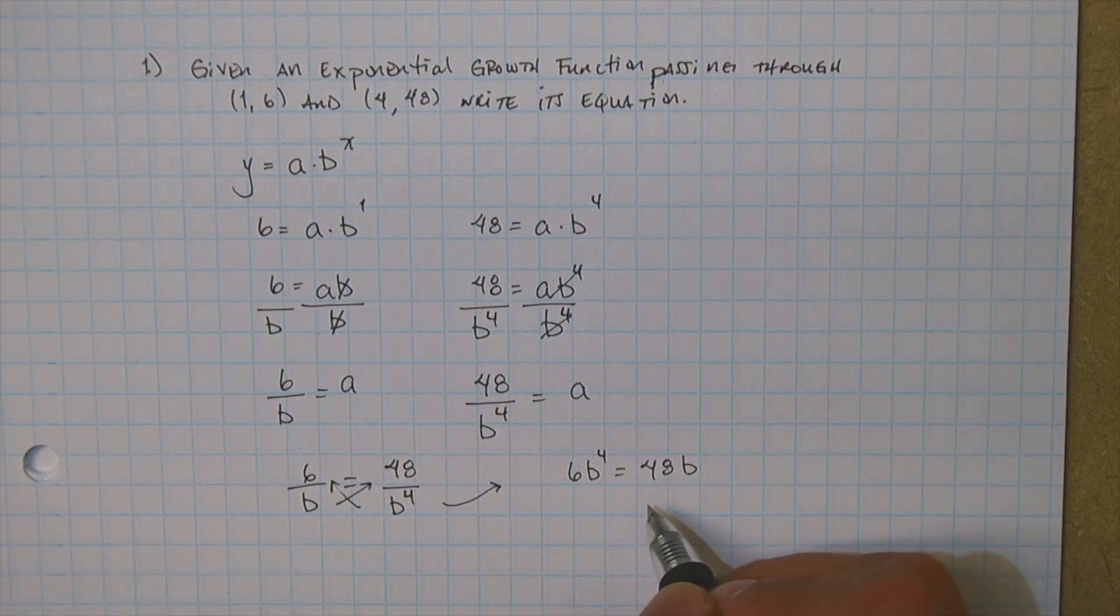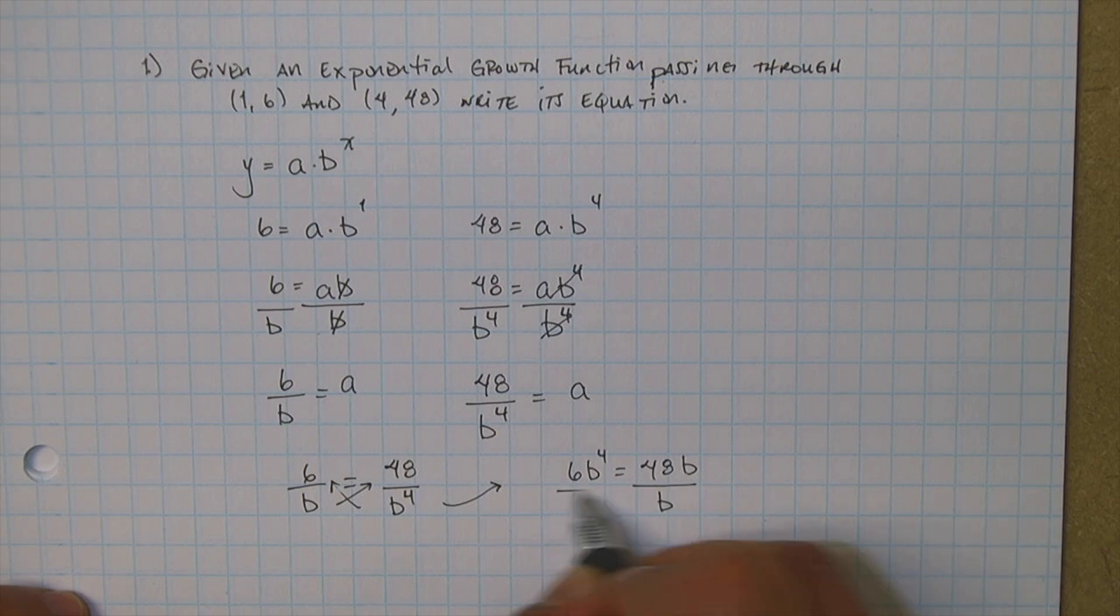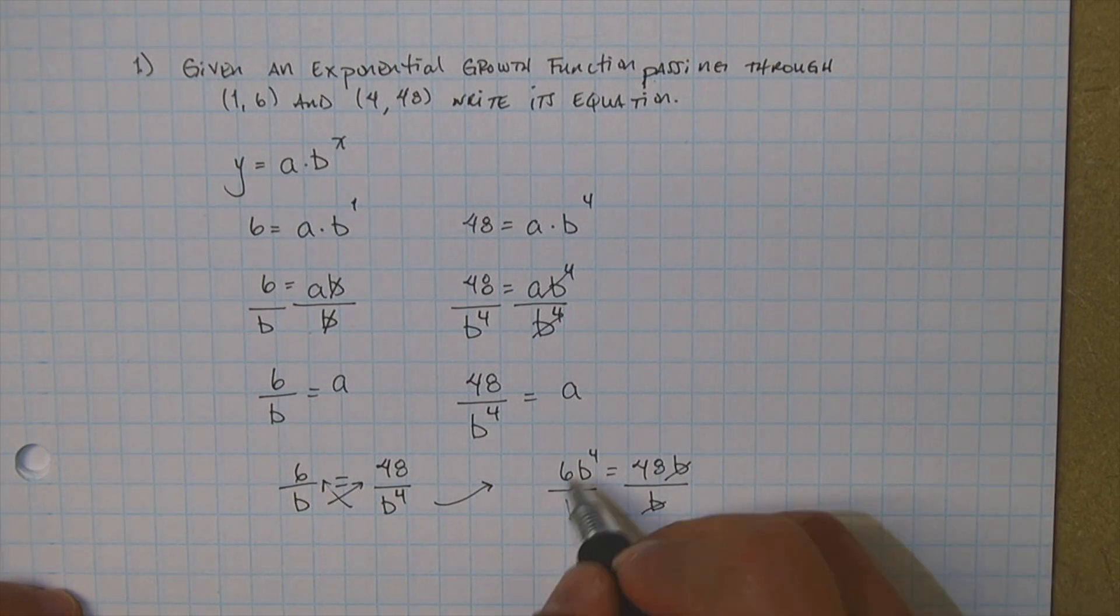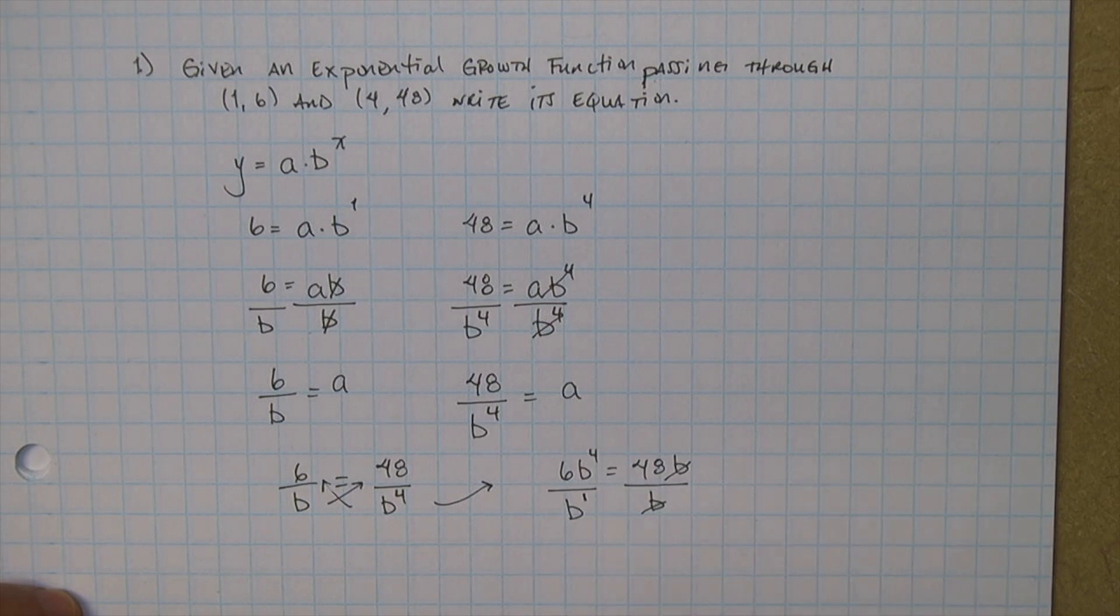Now I want to go ahead and combine like terms. So I'm going to divide by b. And I know I'm going the long way, but just bear with me. So b to the fourth, this is b to the one power. If you remember, this should give you b to the third. Okay, 48 divide by 6, divide by 6. b cubed is going to equal 8.